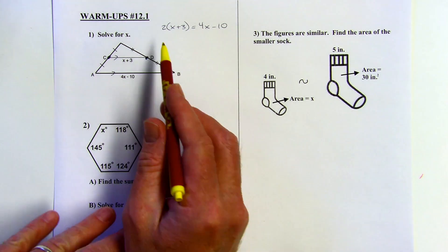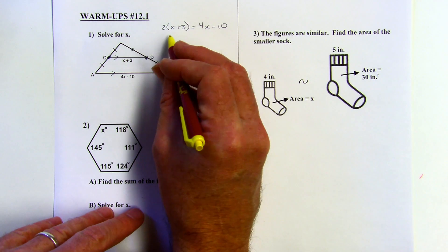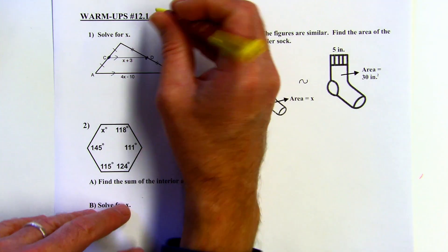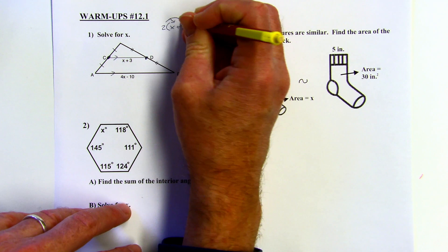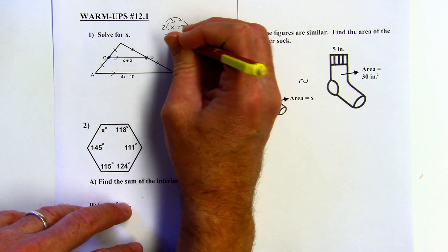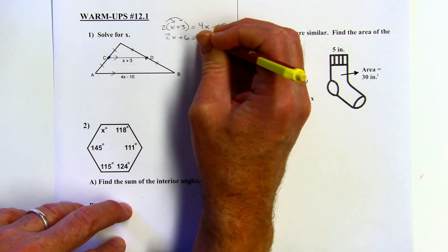So I'm going to solve this here. I'll distribute the two. You could also divide the whole equation by 2. That would work as well. But I'm going to distribute here first. 2X plus 6 is going to equal 4X minus 10.